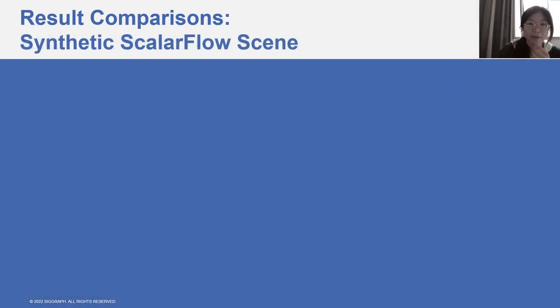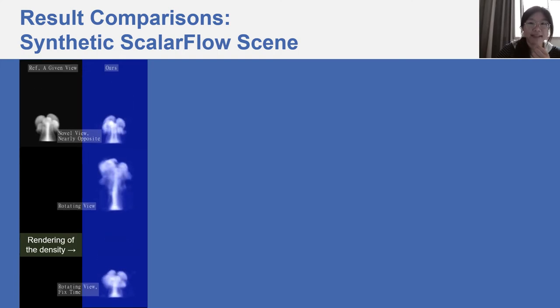Here, we compare our results with related work on the synthetic scalar flow dataset. As shown in the video, the reference on the left has a black background. Using RGB video as input without an alpha channel, our method is able to automatically disentangle the density and color information. We provide a plausible color channel in the rendering results. To visualize the alpha information, we show our results with a different background color in blue.